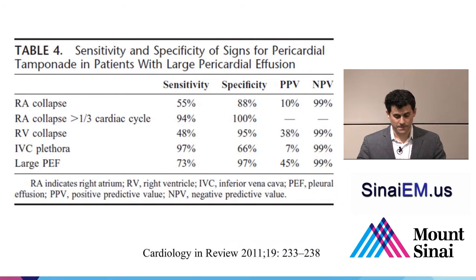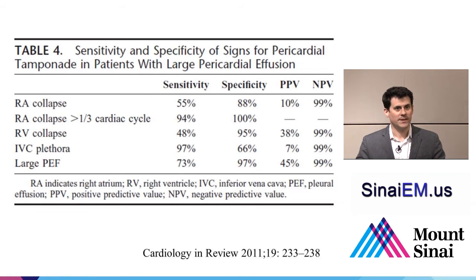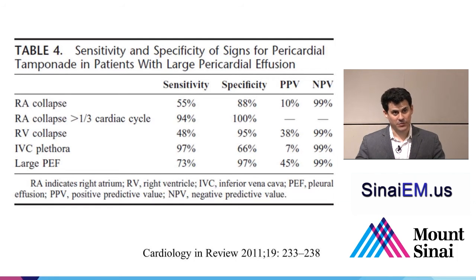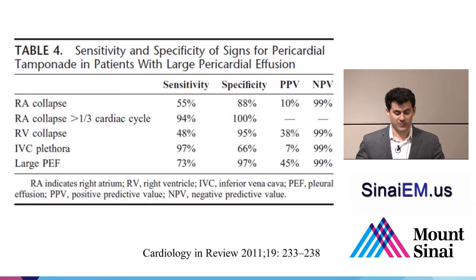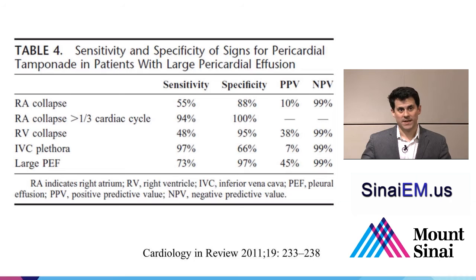Here we see right ventricular function compromised, a large pericardial effusion — the blackness surrounding the heart — and the heart swinging back and forth, which can be demonstrated in ultrasound in real time. Previously only EKG changes would show signs of the heart flopping side to side. A table from Cardiology in Review 2011 demonstrates findings of pericardial tamponade: right atrial collapse, right ventricular collapse, IVC plethora, and pericardial effusion. Large pericardial effusion is very specific, but IVC plethora is probably the most sensitive sign — some feel that without a large dilated inferior vena cava, you don't have pericardial tamponade.